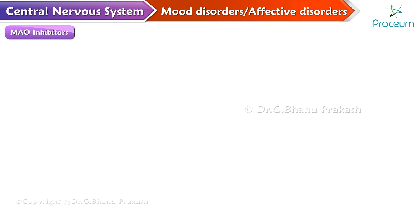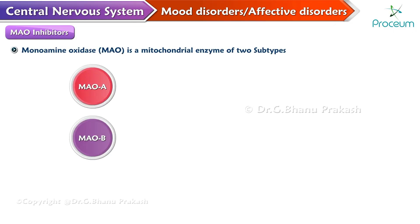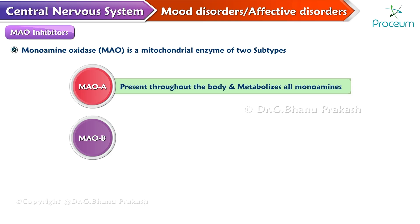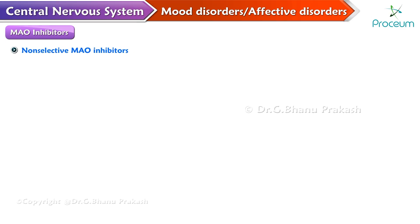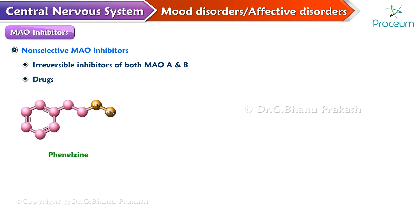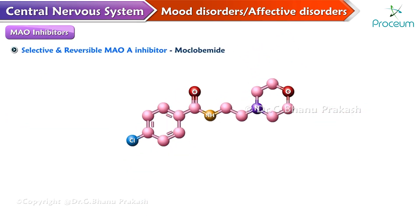Monoamine oxidase inhibitors. MAO is a mitochondrial enzyme of two subtypes A and B. MAO-A is present throughout the body and metabolizes all the monoamines, whereas MAO-B is present specifically in the brain and metabolizes dopamine. Remember: MAO-B — B before brain. Non-selective MAO inhibitors are irreversible inhibitors of both MAO-A and MAO-B. The drugs in this class are phenelzine, isocarboxazid, and tranylcypromine. Selective and reversible MAO-A inhibitor is moclobemide.